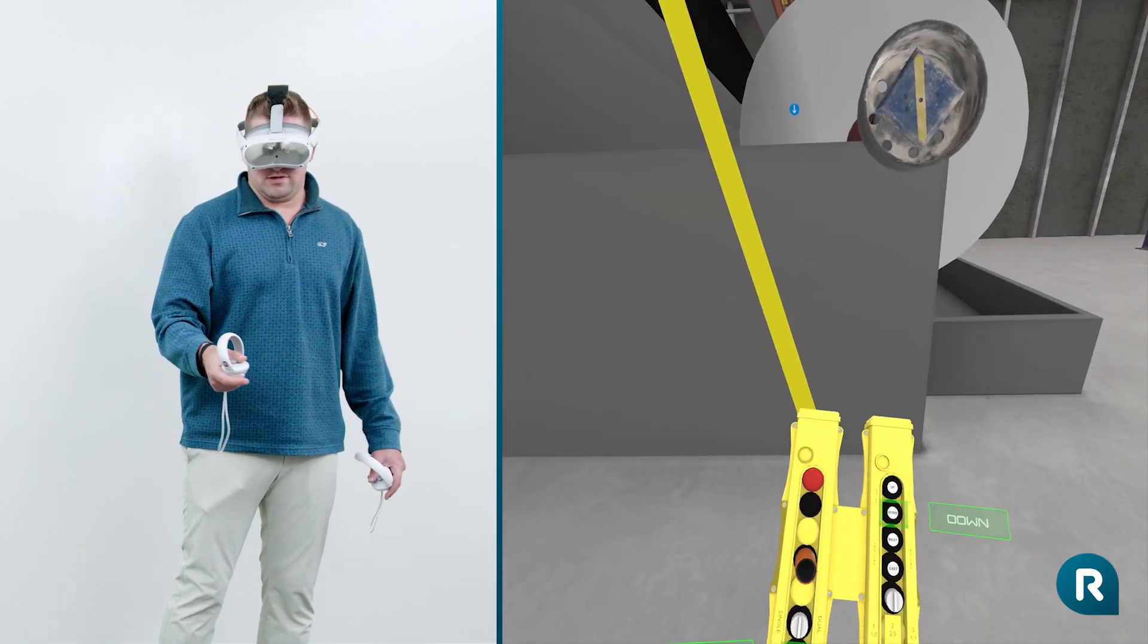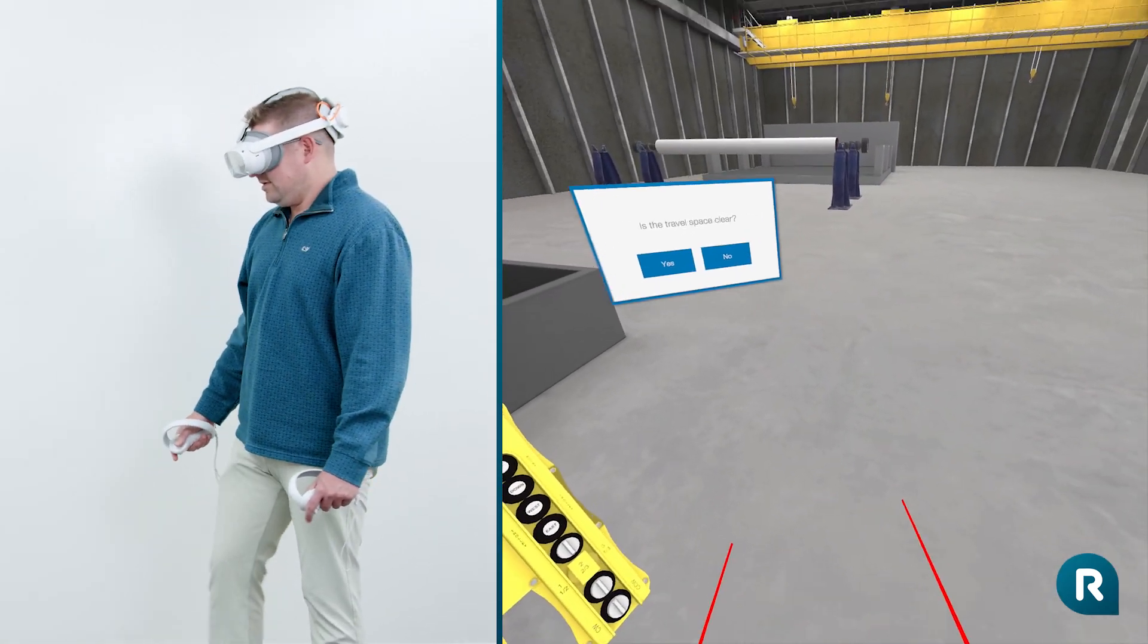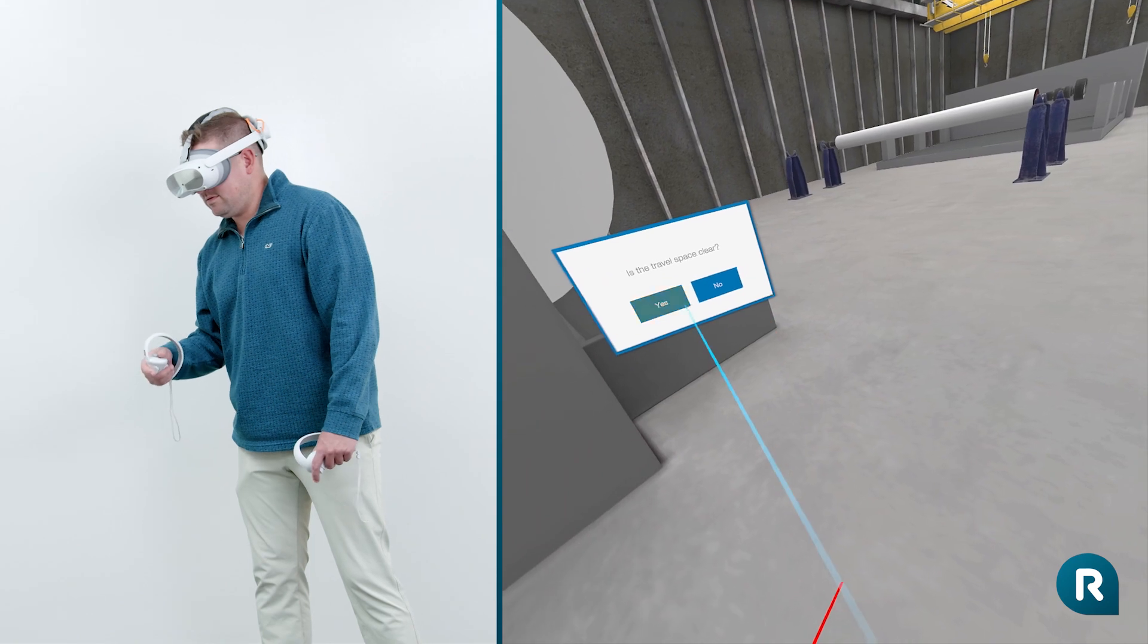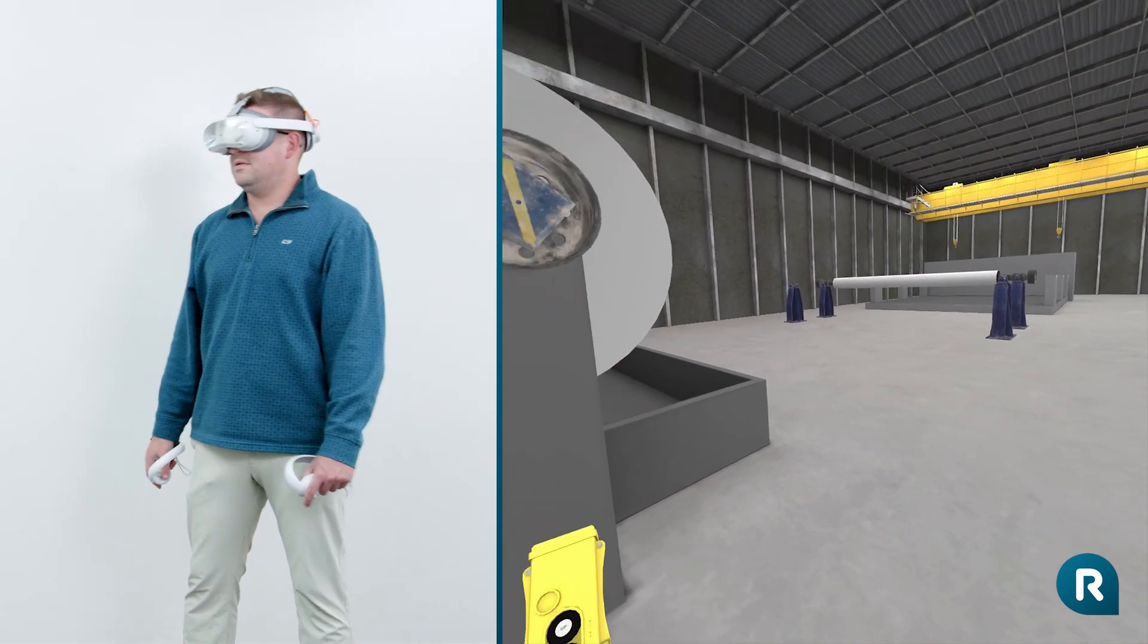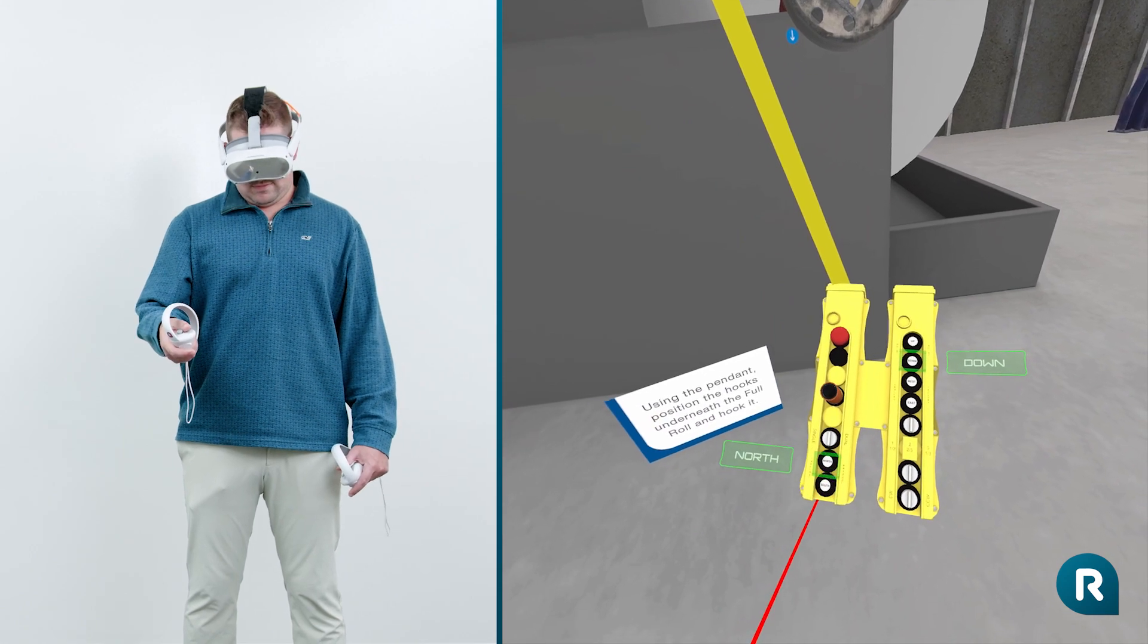Great job! Before we move the full roll, can you make sure the travel space is clear? All clear! Using the pendant, position the hooks under the full roll.